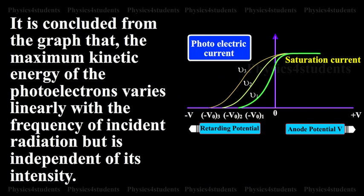It is concluded from the graph that maximum kinetic energy of the photoelectrons varies linearly with the frequency of incident radiation but is independent of its intensity.